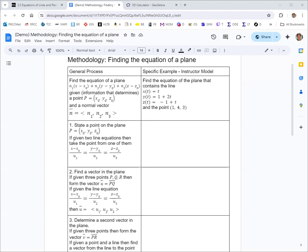In the example we're looking at here, we know that the plane contains the line x equals t, y equals 1 plus 2t, z equals negative 1 plus t, and it contains the point (1, 4, 3).